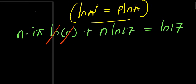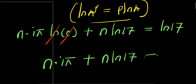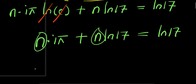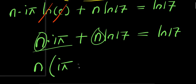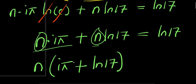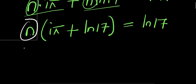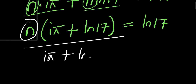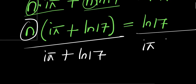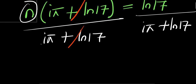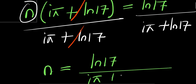So from here, let's cancel natural log of e — since ln(e) equals 1 — and I will simply have n times i times pi plus n times natural log of 17 equals natural log of 17. I can factor n out, giving n times the quantity i times pi plus natural log of 17 equals natural log of 17. Isolating n by dividing both sides by i times pi plus natural log of 17, we get n equals natural log of 17 divided by i times pi plus natural log of 17.